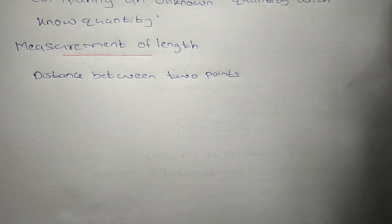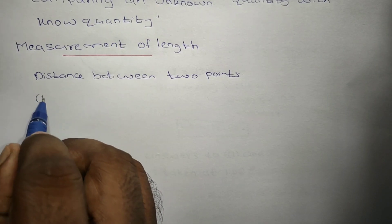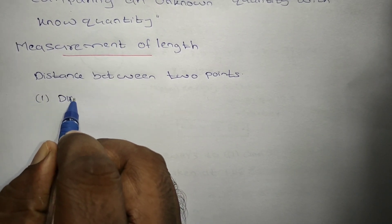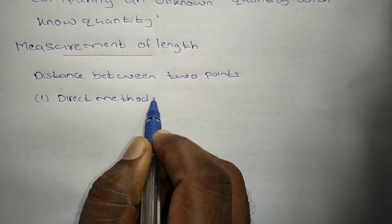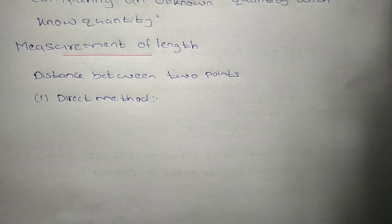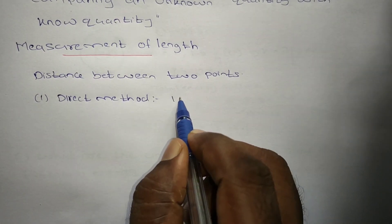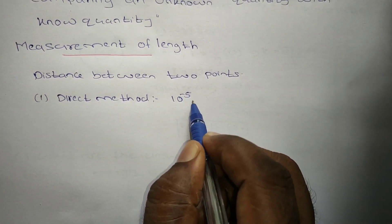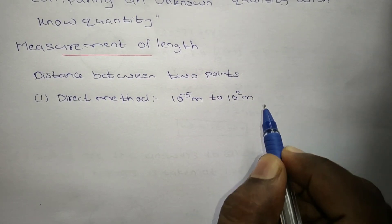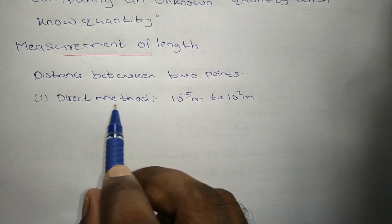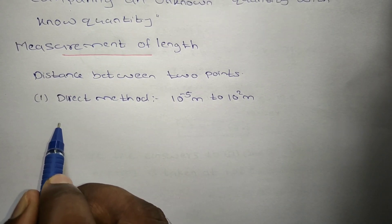Length is measured by using a direct method and an indirect method. In the direct method, we measure using a device directly. Distances from 10 to the power minus 5 meters to 10 to the power 2 meters can be measured using the direct method.